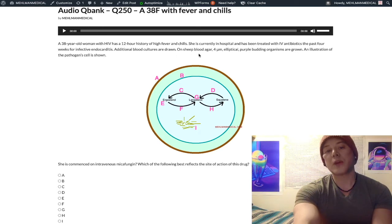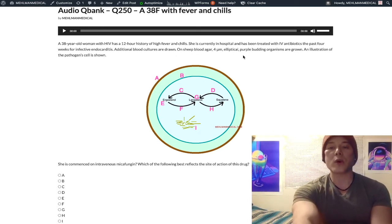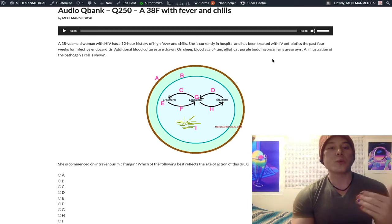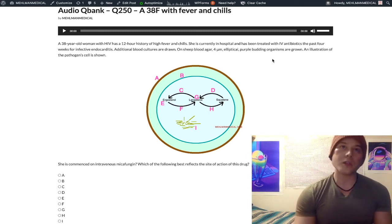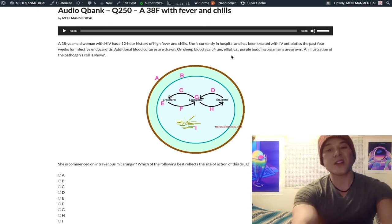Now we keep reading blood sheep agar, four micrometer elliptical purple budding organisms are grown. This is how candida is described on one of the step one NBMEs. So we talk about these buzzy descriptors like listeria, tumbling motility, salmonella, swarming motility, right?